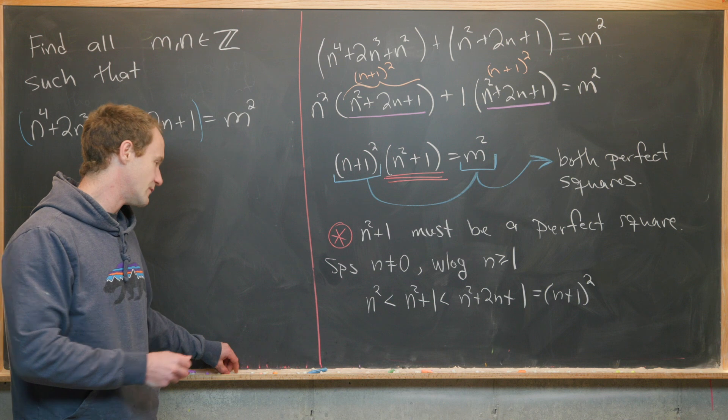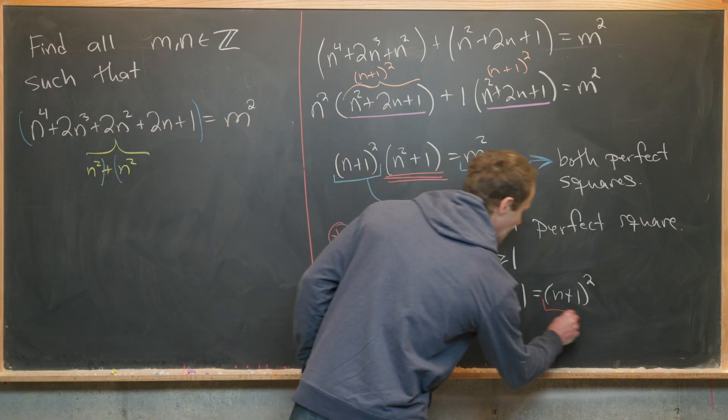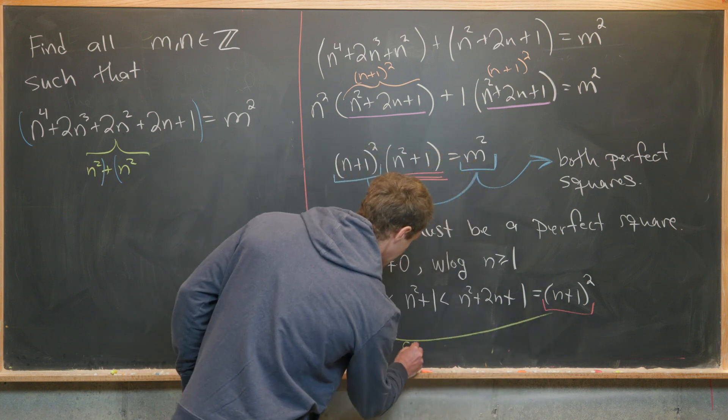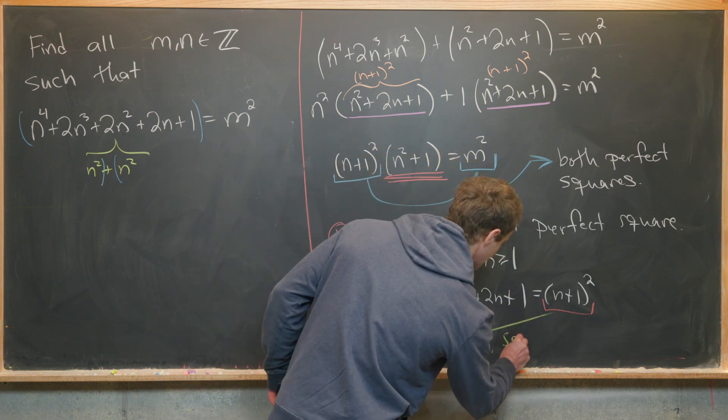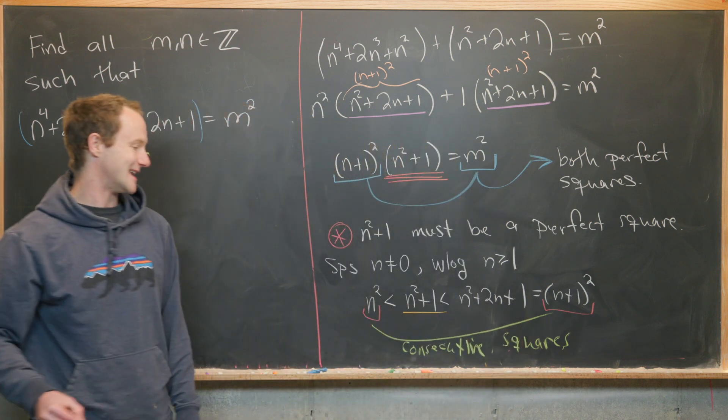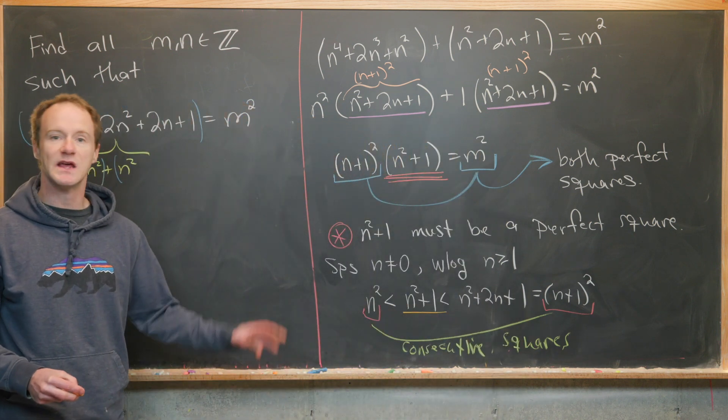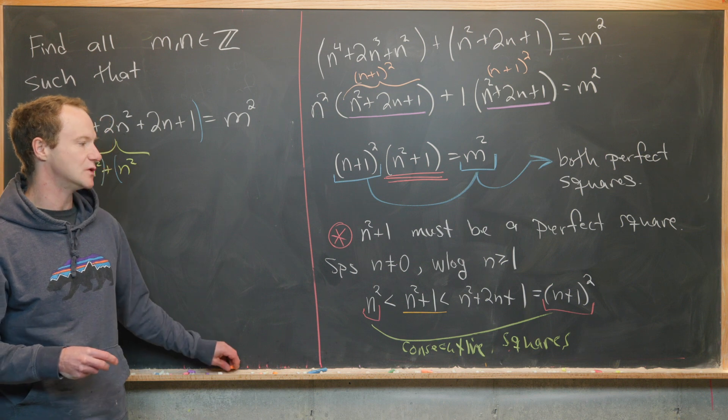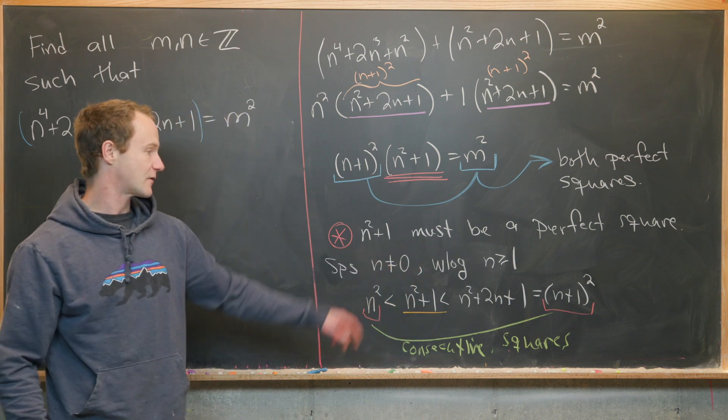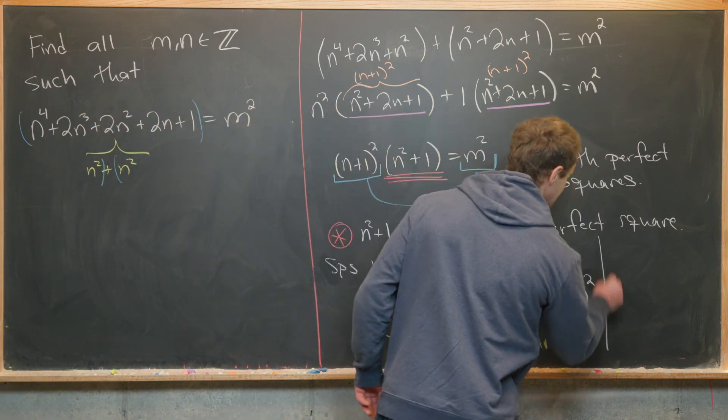So let's see what we've got here. We have n squared and n plus 1 squared, and notice that these are consecutive squares. But we have put our object n squared plus 1 directly between two consecutive squares, which means that it is not a perfect square, unless of course n equals 0.